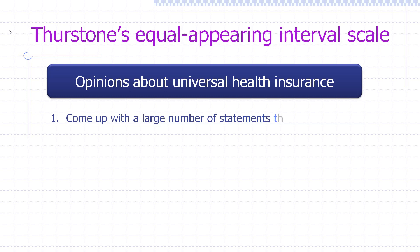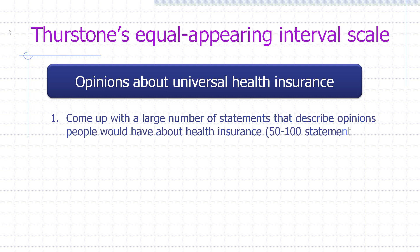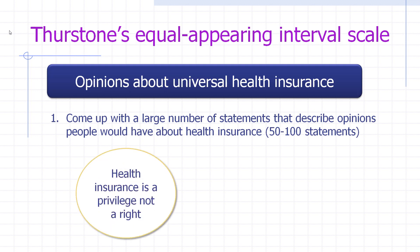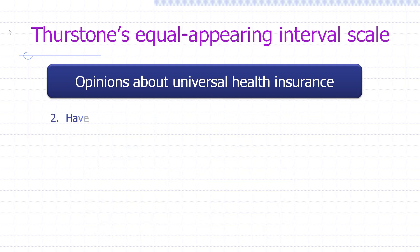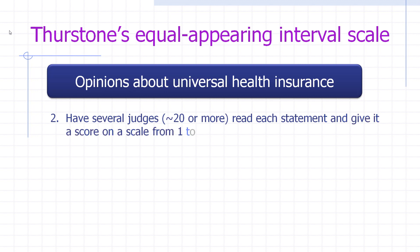Using my example of universal health insurance: the first step is to come up with a large number of statements — around 50 to 100 — that describe opinions people might have about health insurance. For example: 'Health insurance is a privilege, not a right,' or 'Health insurance should be government run.' Those are examples of statements you might come up with.